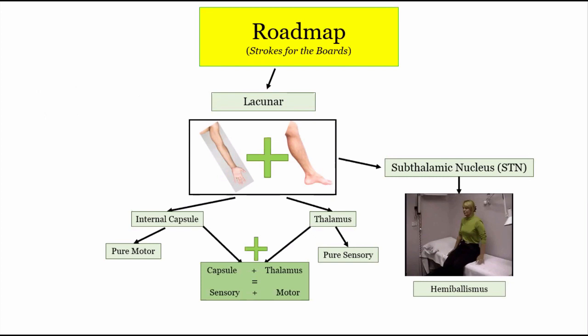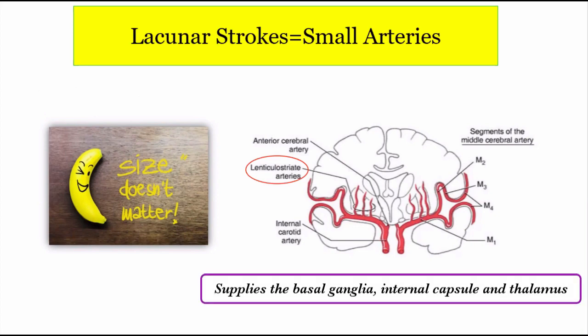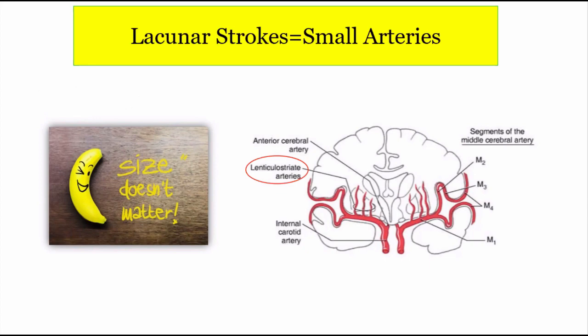But today we'll be talking about strokes that involve all of the above. To understand lacunar strokes, we need to give the little arteries some love. Size isn't everything on the NBME. There are small arteries, including the lenticulostriate arteries pictured here, that branch off from the major cerebral vessels to supply some of the deep structures of the brain. The basal ganglia, internal capsule, and thalamus are all supplied by small branches off either the ACA, MCA, or PCA. Occlusions in these small arteries can have massive and devastating consequences.